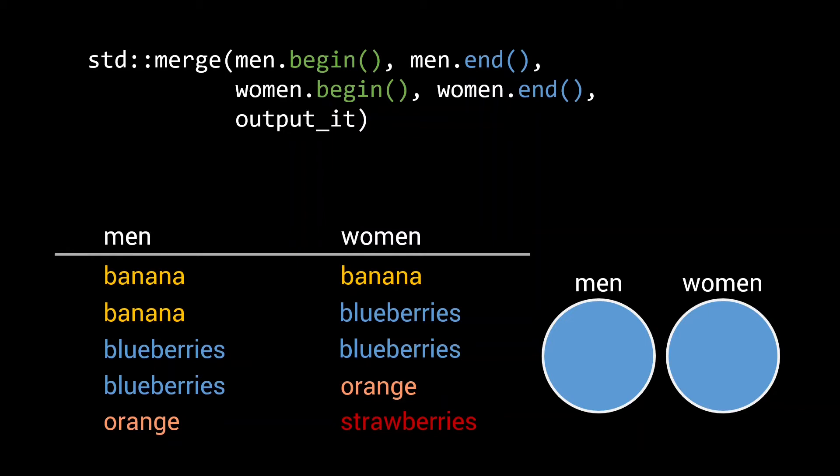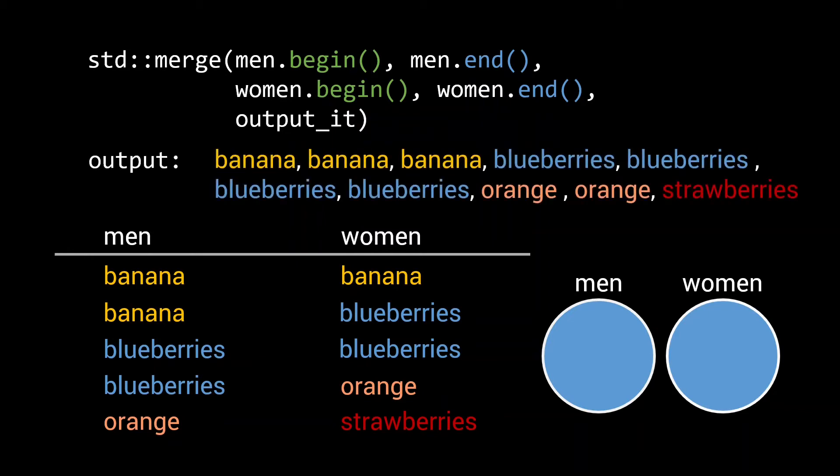The output of merging our two sorted input ranges is a new sorted range with all 10 elements of the original inputs. Merging sorted ranges is an important step in many divide-and-conquer style algorithms, like merge sort.